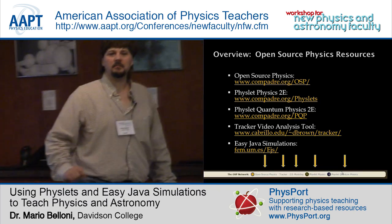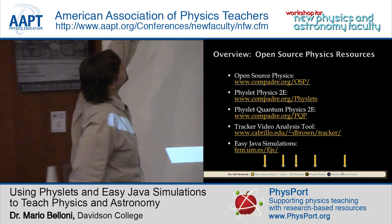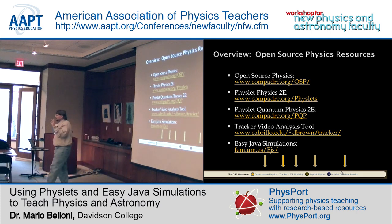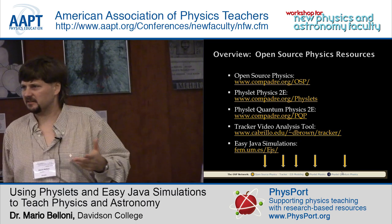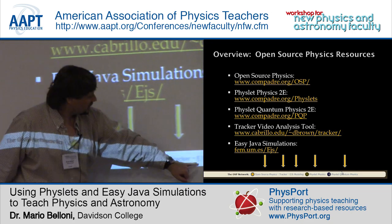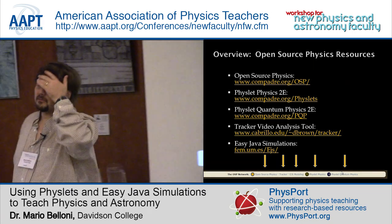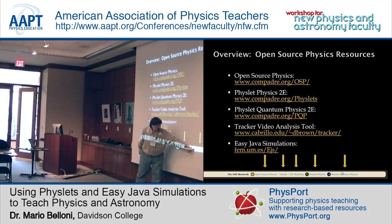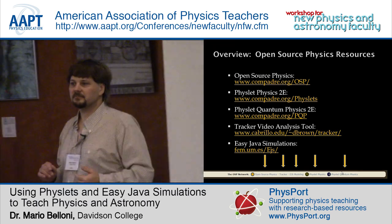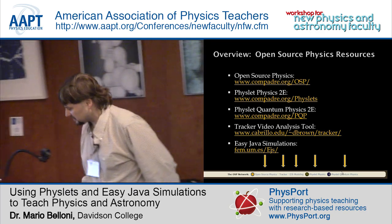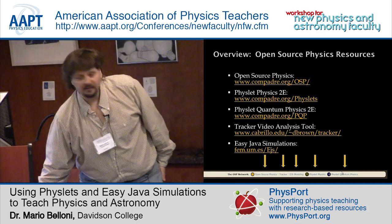The way we've done that is at the bottom of each collection — the Open Source Physics collection, Fizzlet Physics, and Fizzlet Quantum Physics — there's a little bar called the OSP network. At the bottom of every page in these collections, you can easily navigate to something else. So if I'm in the middle of optics in Fizzlet Physics and my next class is modern physics, I need something from special relativity — just click that link at the bottom of the page and it takes you immediately to the other collection.